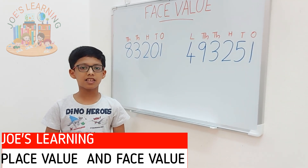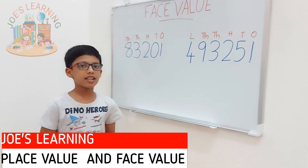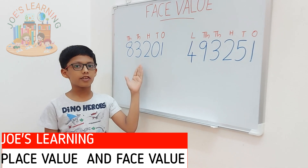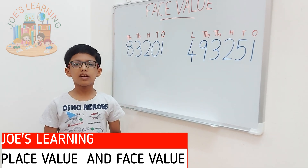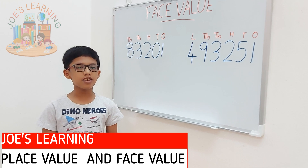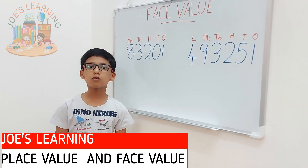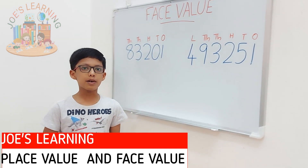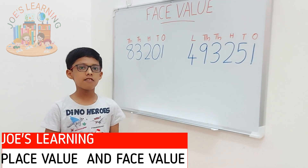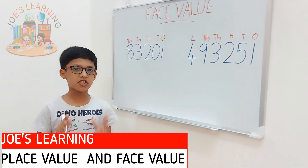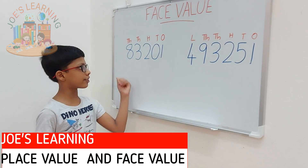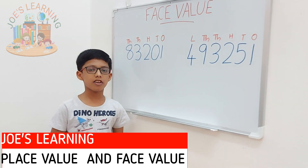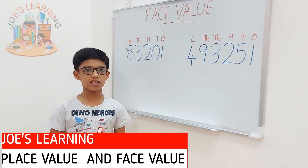Now, let me make this clear with some examples with numbers. Let us take a look at the first example, that is 83,201. In this example, which number is in the ones place? 1 is in the ones place. So, what is the face value of 1? The face value of 1 will be 1, because the face value of a digit will be the digit itself. And in that same way, the face value of the other digits which are in this number will be just the same digit, because face value of a digit is the digit itself.